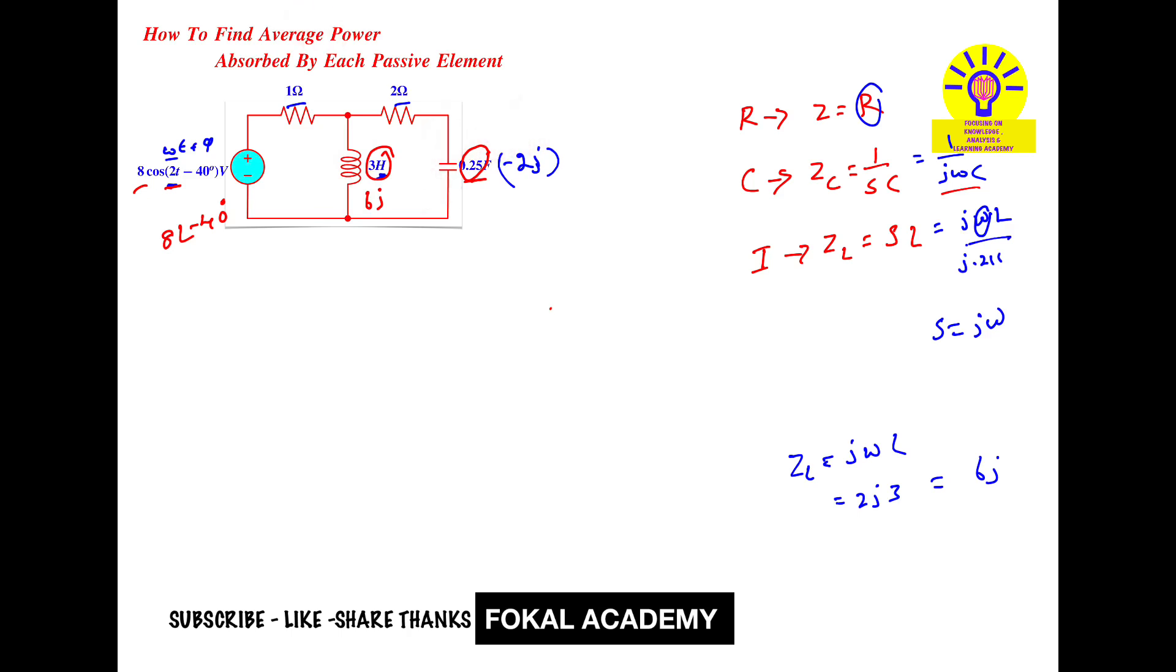In this branch, let's assume there is current I, which is the source current. To find the source current, find the overall impedance. According to Ohm's law, V = IZ, so I = V/Z, where V is the source voltage and Z is the overall impedance.